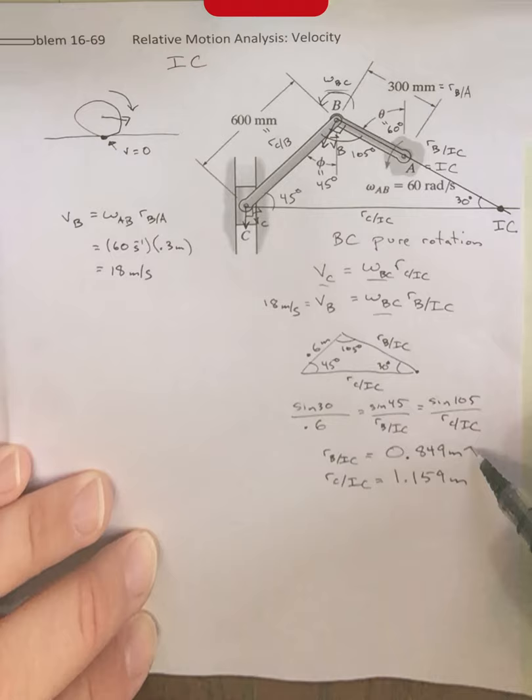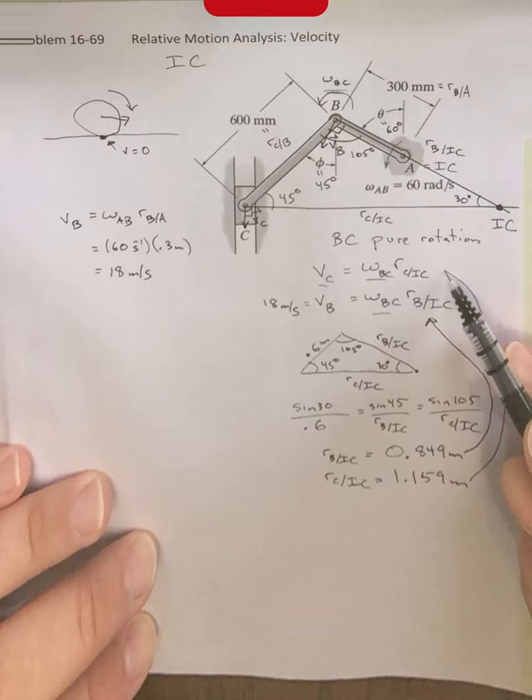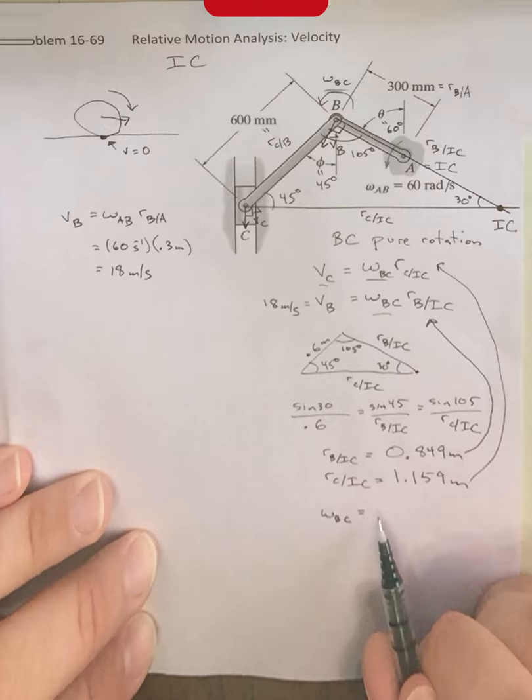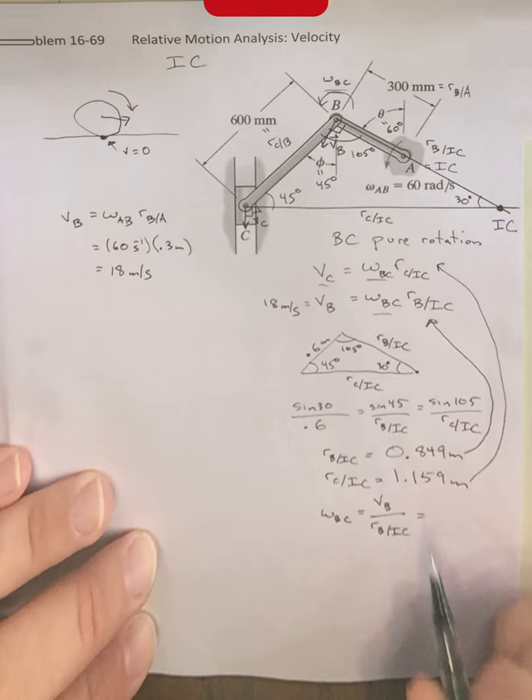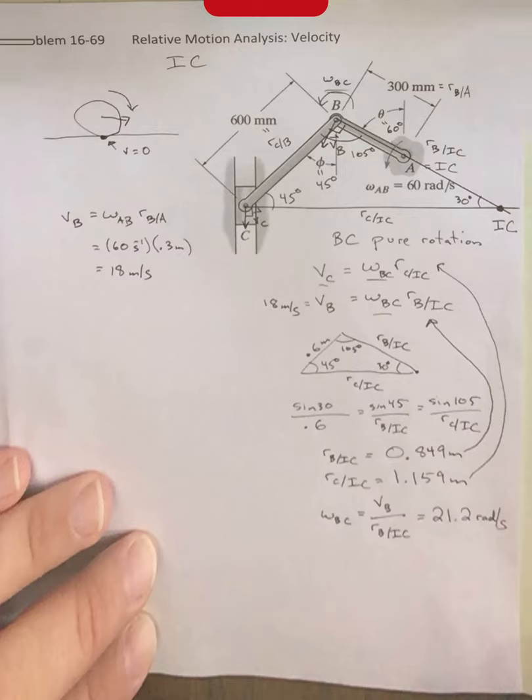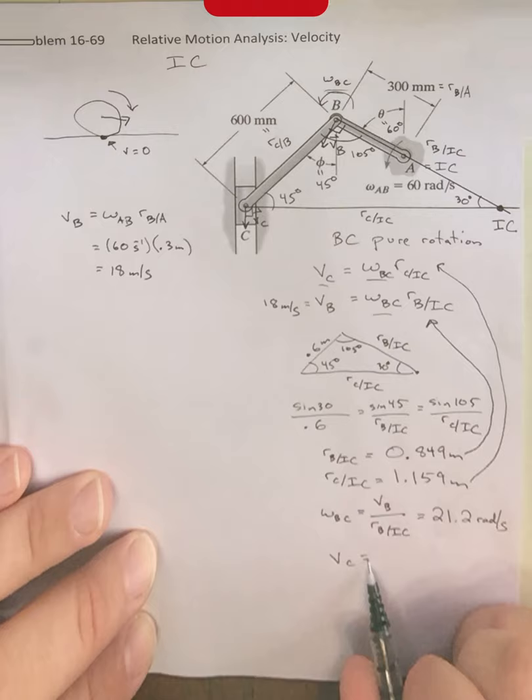Consequently, as I reach a conclusion, the R B IC, we will plug in up there. The R C IC, we will plug in up here. This gives us that omega BC is equal to VB divided by R B/IC. That gives us 21.2 radians per second. Then, plugging that back into our expression up here, this gives us that VC is equal to 24.6 meters per second.